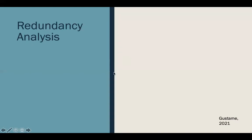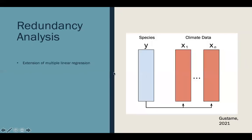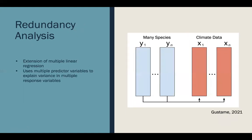Redundancy analysis is an extension of multiple linear regression. In multiple linear regression, you have multiple independent variables — for example, a suite of climate variables — and you're wanting to look at them to explain variation in a dependent variable. In multiple linear regression you just have one dependent variable, which could be the count or presence of one species. Redundancy analysis looks at multiple inputs of predictor variables, in our case climate data, and how they explain variance in multiple response variables, in our case species data.